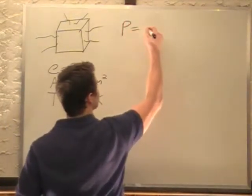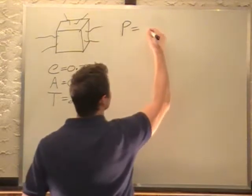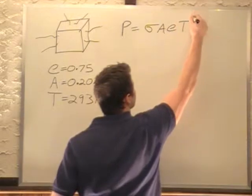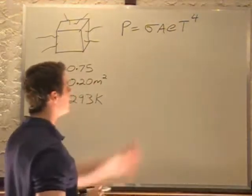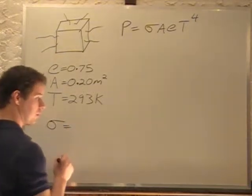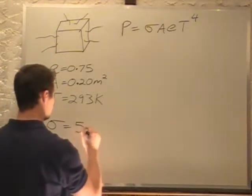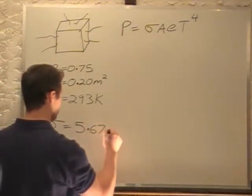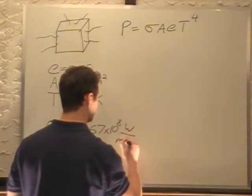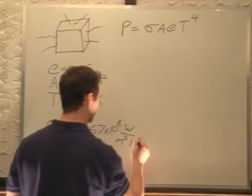P equals sigma A E T to the fourth. Now sigma is a constant equal to 5.67 times 10 to the negative eighth watts per meter squared Kelvin to the fourth.